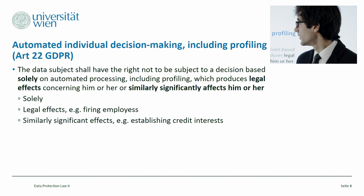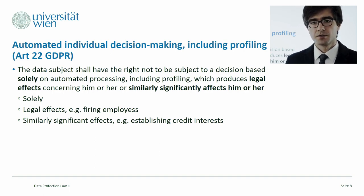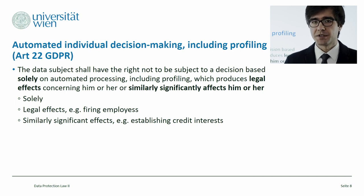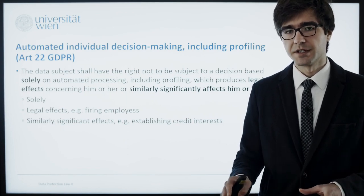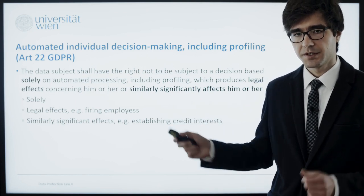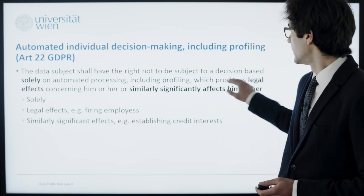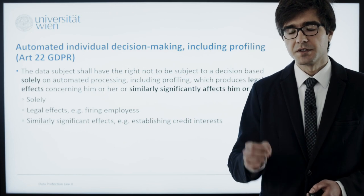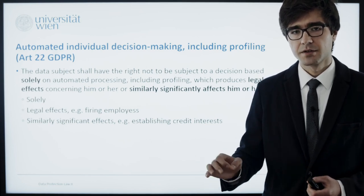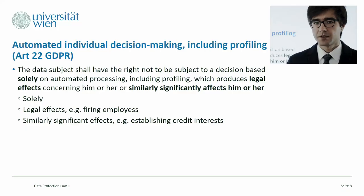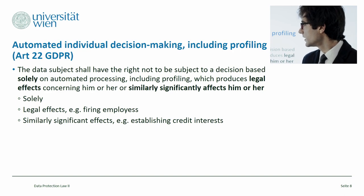If you look at the definition, you will find three crucial elements. First of all, for this right to apply, processing of personal data has to be solely based on automated processing — it means that if there is absolutely no human involvement in processing personal data, then this provision would apply. Second element: legal effects. If this automated decision-making process produces legal effects concerning a data subject, only then article 22 would apply. If that would not be a legal effect, there is also another option — similarly significant effects.